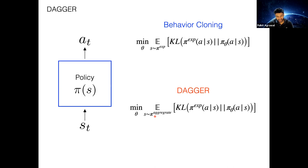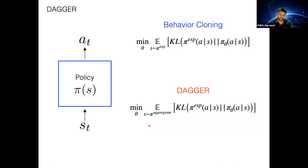Instead of providing expert supervision for all states the policy visits, we could use some measure of uncertainty to only provide supervision where the policy is not doing well. By doing this, we could reduce the amount of expert supervision required. The baseline DAgger provides expert supervision for every state, but one could be more clever and choose a subset of states — which becomes important when expert supervision is expensive.